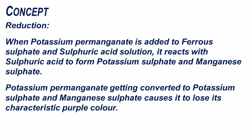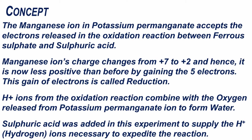Reduction: When potassium permanganate is added to the ferrous sulfate and sulfuric acid solution, it reacts with the sulfuric acid to form potassium sulfate and manganese sulfate, losing its characteristic purple color. The manganese ion in potassium permanganate accepts the electrons released in the oxidation reaction. Manganese ion's charge changes from +7 to +2 by gaining 5 electrons. This gain of electrons is called reduction.